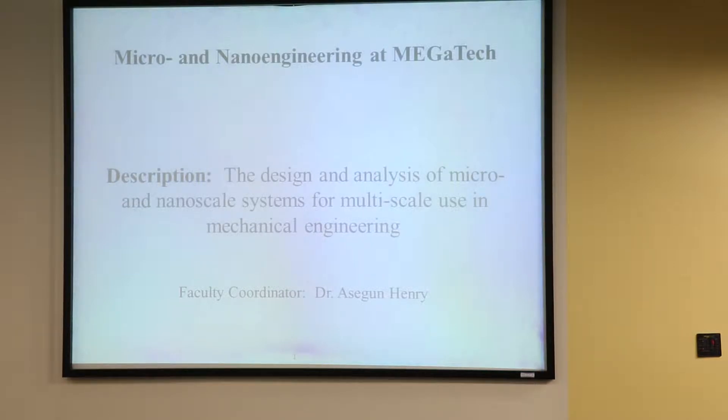How many of you guys, by show of hands, know what micro or nano engineering even means? Well, let me try and explain it. There's a description written on the slide: the design and analysis of micro and nano scale systems for multi-scale use in mechanical engineering. It turns out that how materials or objects behave when they're really tiny can be very different than how they behave when they're very large. Micro and nano engineering is focused on understanding the science of how things change at smaller scales, and then exploiting that to engineer something that behaves differently than it would at a large scale.